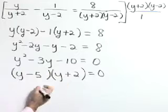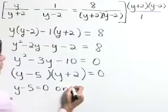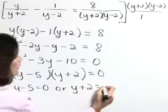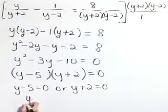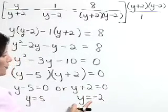Now use your zero factor property. Y minus 5 is equal to 0, or y plus 2 is equal to 0. So y is equal to 5, or y is equal to negative 2.